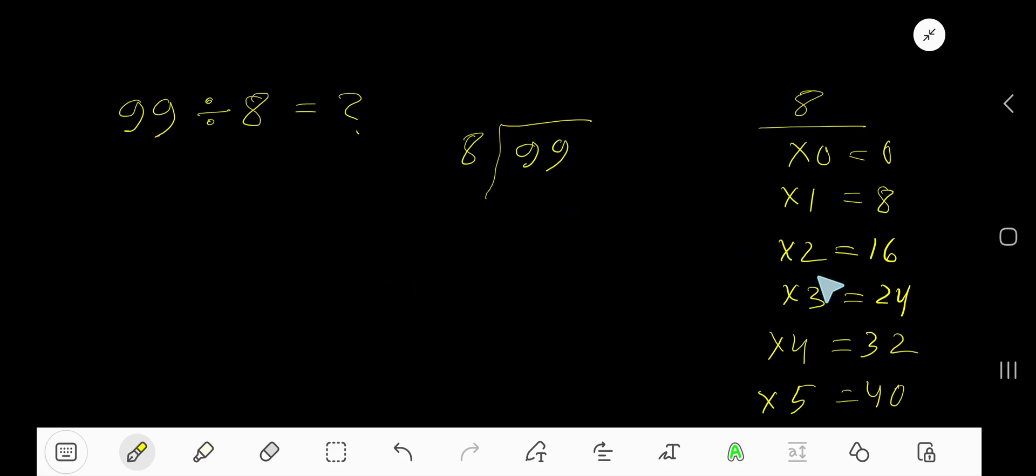Now, 8 goes into 9 how many times? 8 times 2 is 16, which is greater, so 1 time. Write 1. 1 times 8 is 8. Subtract and bring down the 9. 8 goes into 19 how many times? 8 times 3 is 24, which is greater, so 2 times. 2 times 8 is 16. Subtract, you get 3.